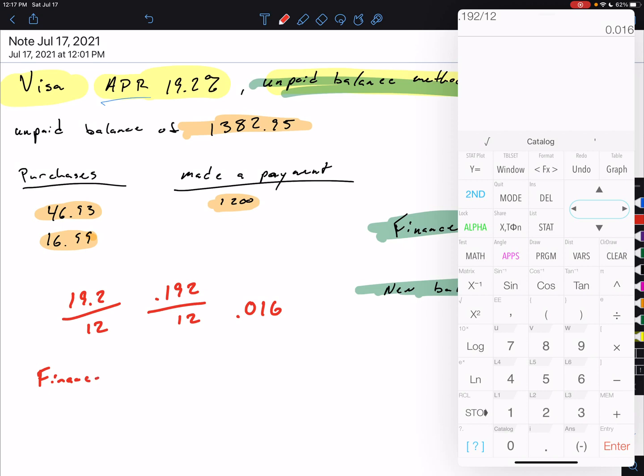We're going to take that unpaid balance of $1,382.95 and multiply it by our monthly rate of 0.016. So $1,382.95 times 0.016, we get $22.13.